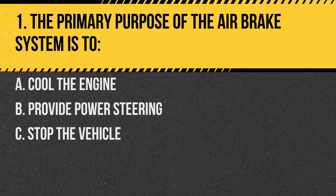Question 1. The primary purpose of the air brake system is to: A. Cool the engine. B. Provide power steering. C. Stop the vehicle. Answer C. Stop the vehicle. The main function of the air brake system is to safely stop the vehicle.